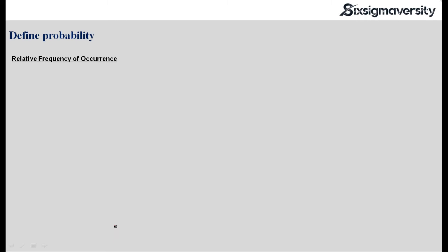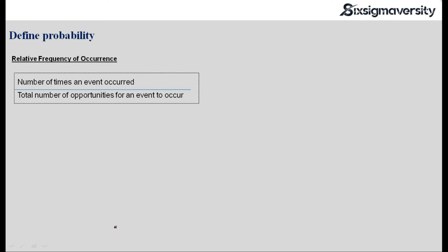Let's look at the next one, which is relative frequency of occurrence. This is based on our experience or historical data. The calculation is: the number of times an event occurred divided by the total number of opportunities for an event to occur. Simple example: if you want to understand the probability of you reaching office every day at 8am, I go back and look at my login time for the last one month. I see that I've reached office between 7:45 to 8am almost every day, except maybe 20% of the days. So my probability of reaching office by 8am is 80%, based on historical performance or some information available with you.